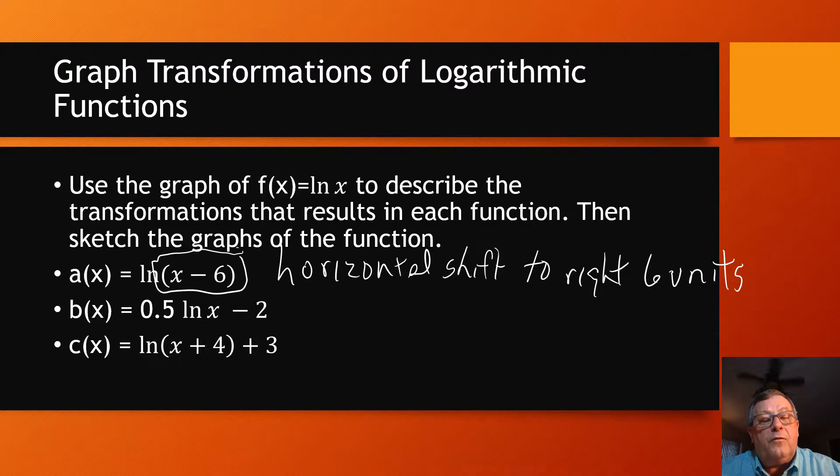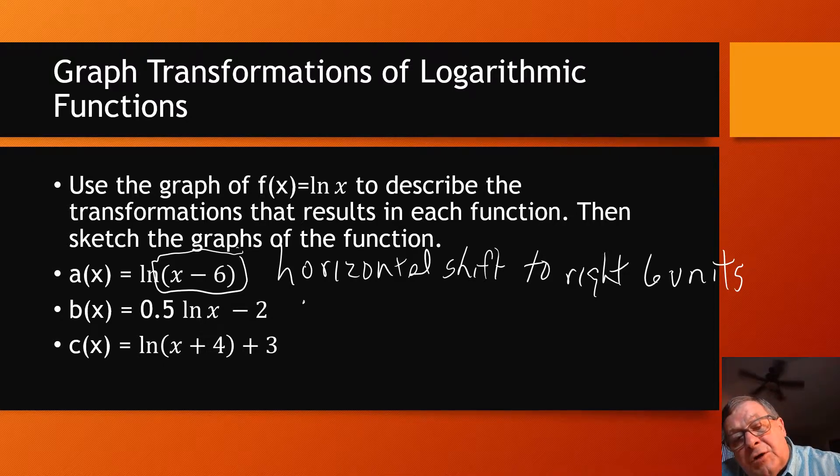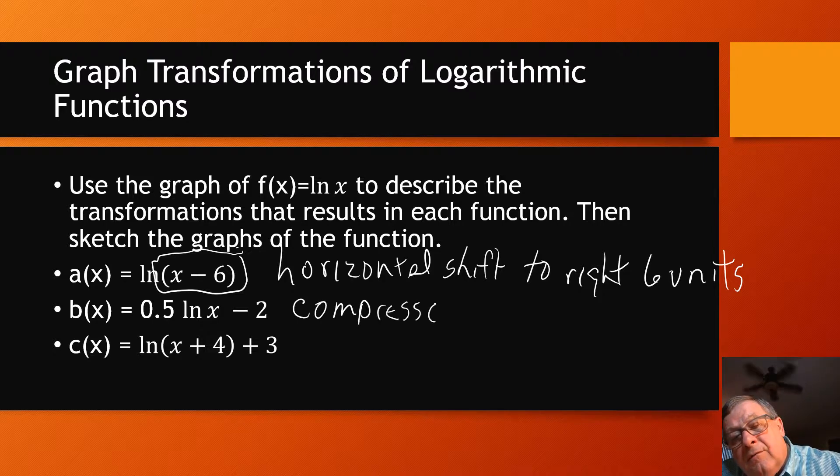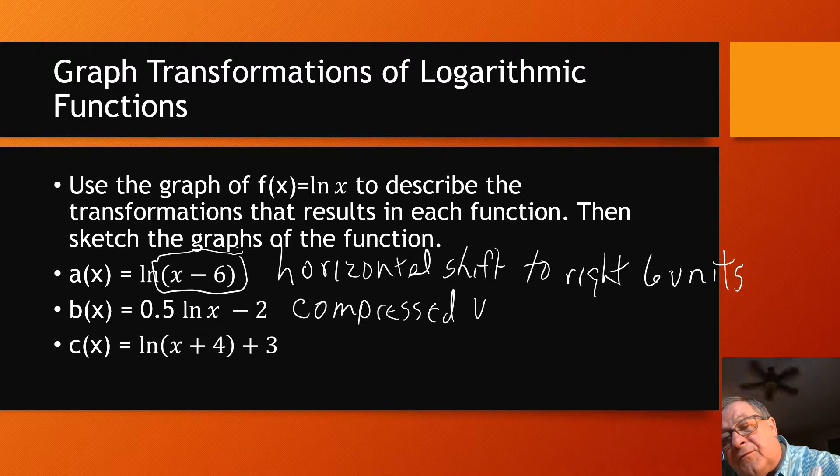Now, in this second one, b(x) equals 0.5 or one half. So we've got a coefficient here. It's less than 1. That tells me I'm either going to see an expansion or a compression. Ln, the natural log of x, and then the minus 2. But it's not inside the parentheses. So I actually got two transformations going on here. And so that one half ln is going to compress the function. It's going to be compressed vertically by a factor of one half.